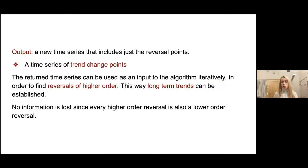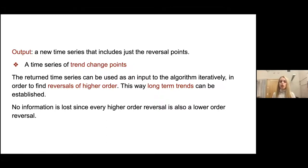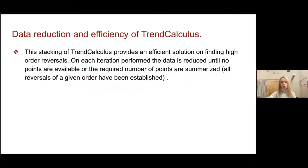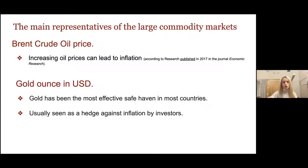We can use this time series again as input to the algorithm iteratively to find reversals of higher order, allowing long-term trends to be established. No information is lost, since every higher-order reversal is also a lower-order reversal — a reversal of order five is also of orders four, three, two, and one. This stacking of trend calculus provides an efficient solution for finding high-order reversals; on each iteration the data is reduced until no points are available or the requested number of reversals is reached.